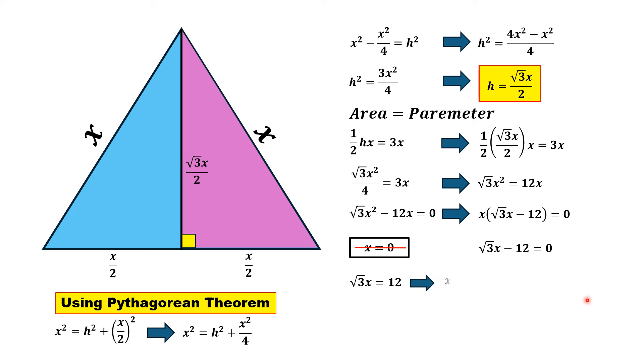Dividing both sides by √3, we have x = 12/√3. Radicals cannot be written in the denominator, so rationalizing by multiplying and dividing by √3, we have x = 12√3/3. 12 and 3 cancel out, giving x = 4√3.